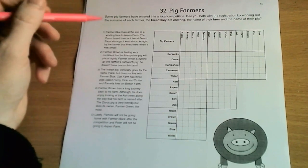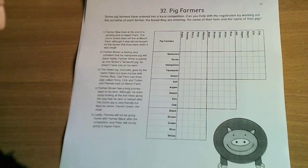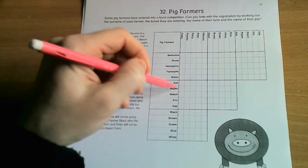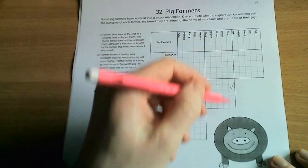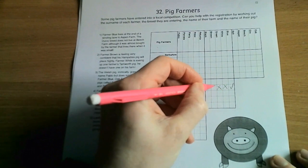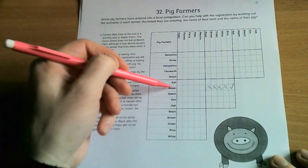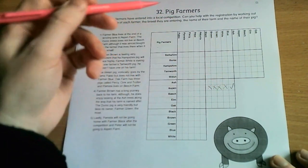Okay, so the first clue tells us that Farmer Blue lives at the end of the winding lane to Aspen Farm. So here's Farmer Blue and here's Aspen Farm, so we can tick the link where Blue in this column meets Aspen in this column, and then we can cross off all the other options since there's only one assignment in each category.